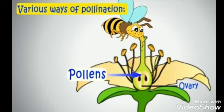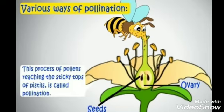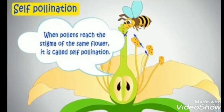So this process of pollens reaching the sticky top of the pistil is called pollination. Pollens can reach the stigma of the same flower or the stigma of another flower — that is called self-pollination and cross-pollination. Self-pollination: when pollens reach the stigma of the same flower, it is called self-pollination. It is the transfer of pollen grains from the anther to the stigma of the same flower or another flower of the same kind.